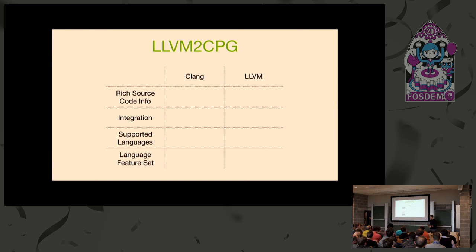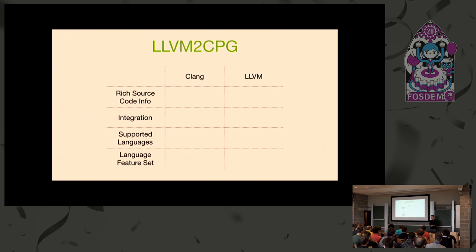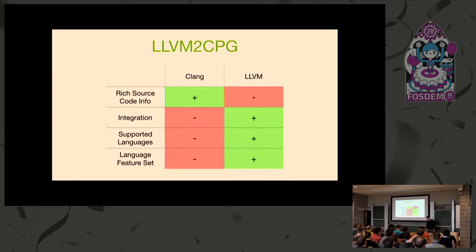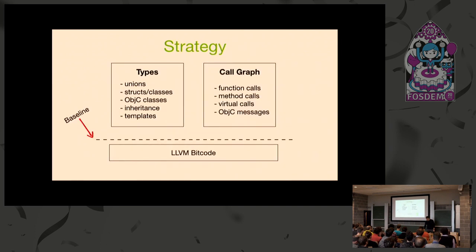On macOS it's very common for Objective-C code to mix with Swift. For that you can't use just Clang — you'd have to combine the Swift compiler and Clang compiler somehow. But because of LLVM as a baseline, we can handle multiple source languages in one place. Also, the language feature set for C, C++, and Objective-C is just huge — building support for that would probably take several years. With LLVM it's much smaller, meaning time to market is much faster.